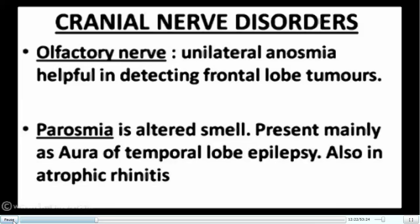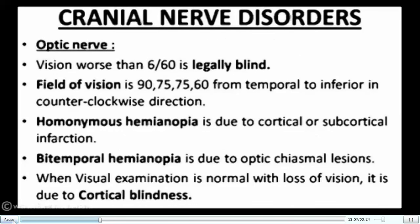Moving to cranial nerve disorders: the olfactory nerve relates to smell. Bilateral loss of smell is usually non-specific, suggesting local pathology. Unilateral anosmia is helpful in detecting frontal lobe tumors such as meningiomas. Parosmia — altered smell — presents mainly as an aura of temporal lobe epilepsy and is also an important feature of atrophic rhinitis.